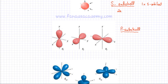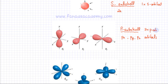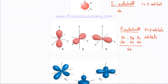Whenever somebody mentions the P subshell, they are talking about the PX, PY, and PZ orbitals together — three P orbitals grouped together. Since each orbital can accommodate a maximum of two electrons, a P subshell can have a maximum of six electrons. Don't get confused: the P subshell means the three PX, PY, and PZ orbitals together, not separate P orbitals.